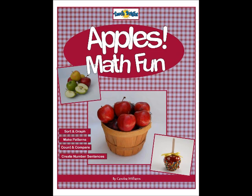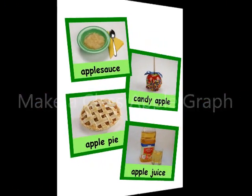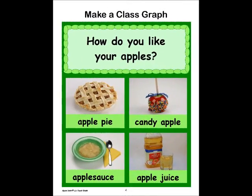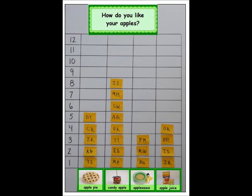First of all, you can make a class apple graph by having kids brainstorm different ways that you can eat apples, creating a question, and then placing all those materials on a graphing template, and inviting students to place their vote in the correct column. And then be sure, of course, to ask students to analyze that data.